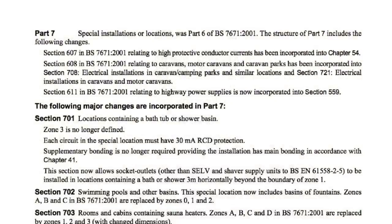If you're an older sparky like me, you'll know that supplementary bonding is something that has changed quite a lot over the years. You'll remember that supplementary bonding is something we always had to install in bathrooms and shower rooms, until a previous change to section 701 for rooms containing a bath or shower, which permitted supplementary bonding to be omitted in those locations as long as circuits comply with the disconnection time, RCD protection is installed, and extraneous conductive parts are connected to the protective equipotential bonding. However, it's important to note that supplementary bonding is still included in BS7671 and there are some special locations where it cannot be omitted.